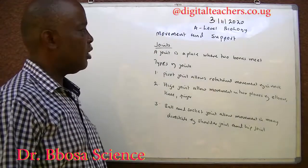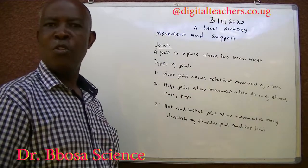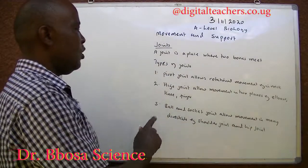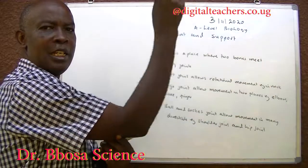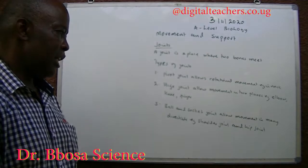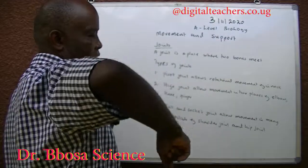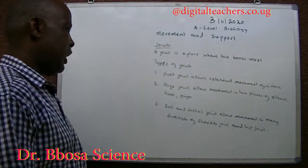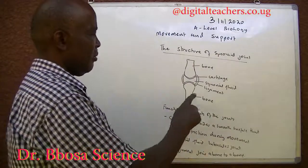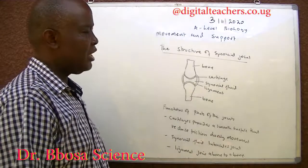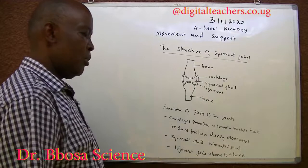A joint is a place where two bones meet. Types of joints: 1. Pivot joints allow rotation movement, for example in the neck. 2. Hinge joints allow movement in two planes, for example in this direction and that direction. 3. Ball and socket joints allow movement in many directions, for example the shoulder joint and hip joint. The structure of a synovial joint: cartilages provide a smooth surface to reduce friction during movement. In between the cartilages there is synovial fluid, which lubricates the joint. Ligaments are structures that join a bone to a bone.